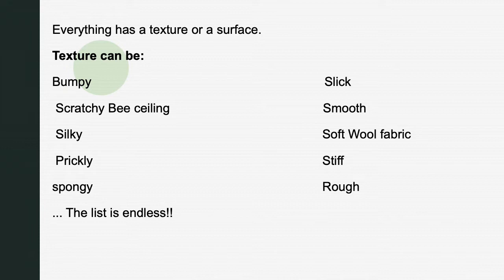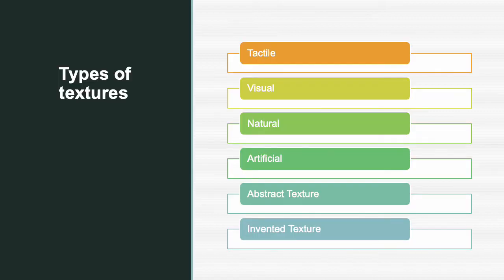Everything has a texture or a surface. Words describing texture include flat, smooth, shiny, glossy, glittery, velvety, soft, wet, furry, sandy, leathery, crackled, prickly, aggressive, rough, bumpy, puffy, rusty, and slimy — the list is endless. All these words explain different types of textures. Textures have many types; some important types are tactile texture, visual texture, natural texture, artificial texture, abstract texture, and invented texture.